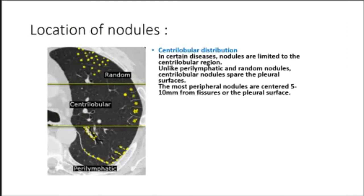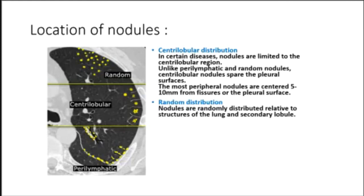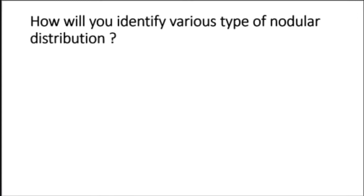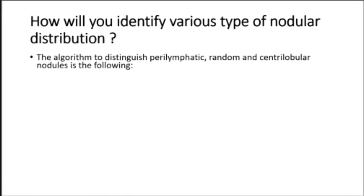The most peripheral centrilobular nodules are centered 5 to 10 millimeters from fissures or the pleural surface. In random distribution, nodules are randomly distributed relative to structures of the lung and secondary lobule. Nodules can be seen to involve the pleural surfaces and fissures, but lack the subpleural predominance often seen in patients with a perilymphatic distribution.